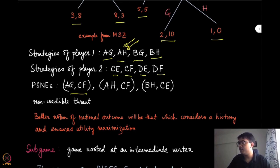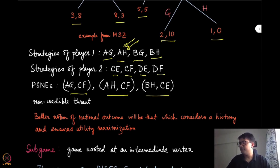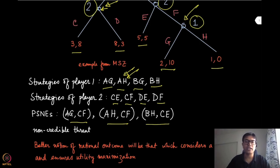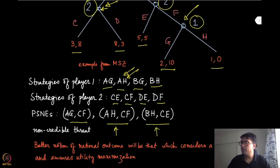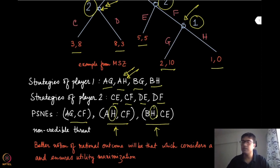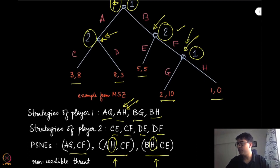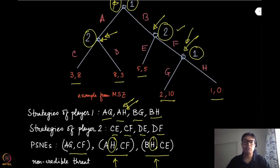The three PSNEs are: (AG, CF), (AH, CF), and (BH, CE). Now, like the previous example, certain things are not really credible. In these two strategy profiles, player one is playing action H in the second round. Player one can play H only when it reaches that node, but if that node is ever reached, do you think player one will play H? Because if player one plays H it gets a utility of one, while by playing G it gets a utility of two.